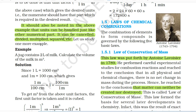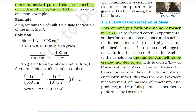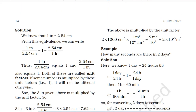Another example: a jug contains 2 litres of milk — calculate the volume of the milk in cubic metres. Solution: since 1 litre = 1000 cm³ and 1 m = 100 cm, we get 1 m/100 cm = 1. Cubing this unit factor: (1 m / 100 cm)³ = 1 m³ / 10⁶ cm³ = 1. Now 2 litres = 2 × 1000 cm³. Multiplying by the unit factor: 2 × 1000 cm³ × (1 m³ / 10⁶ cm³) = 2 m³ / 10³ = 2 × 10⁻³ m³.